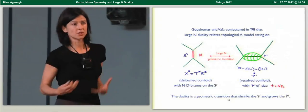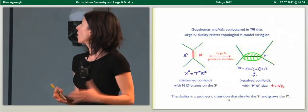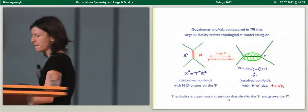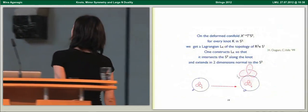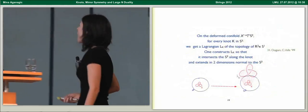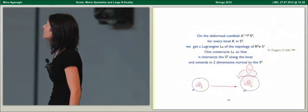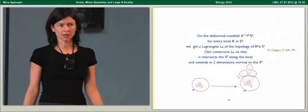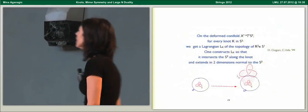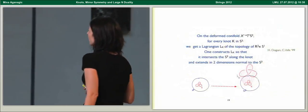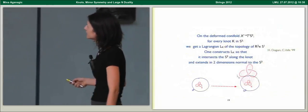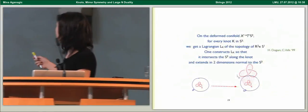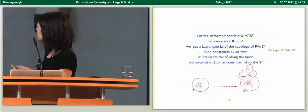They said that the duality is a geometric transition where you shrink the S3 and grow the P1. Before the transition on the deformed conifold, for every knot in S3, you get a Lagrangian of topology R2 times S1 in a very simple way.